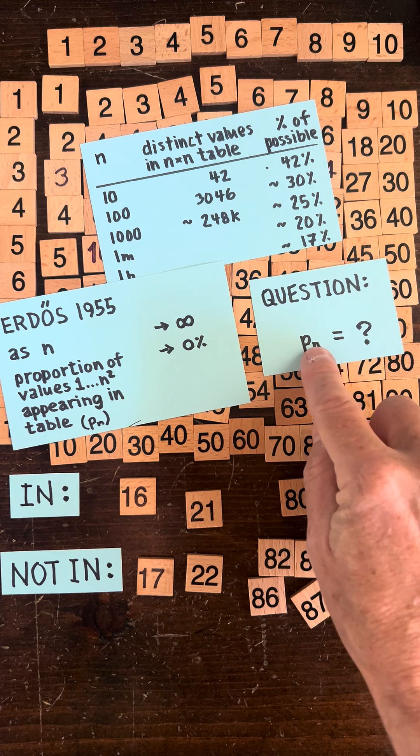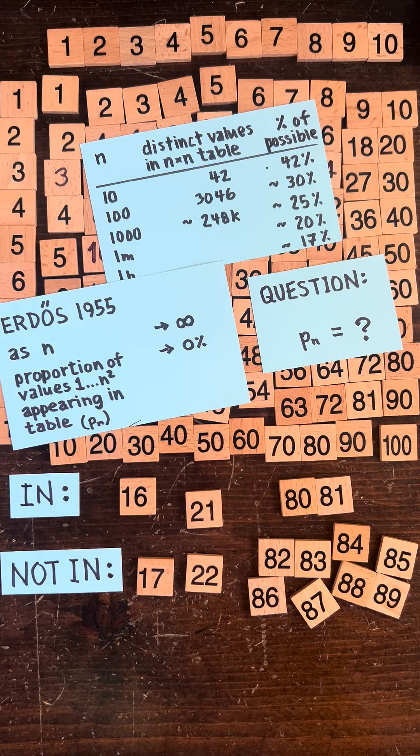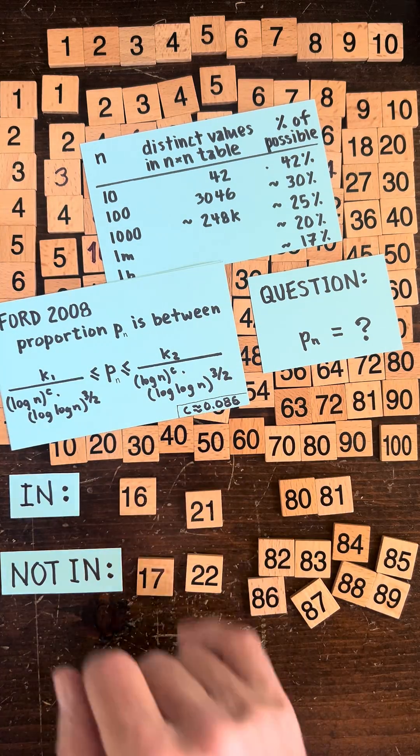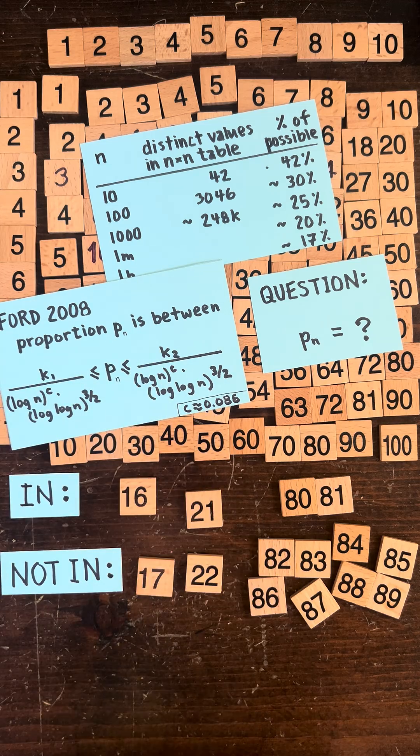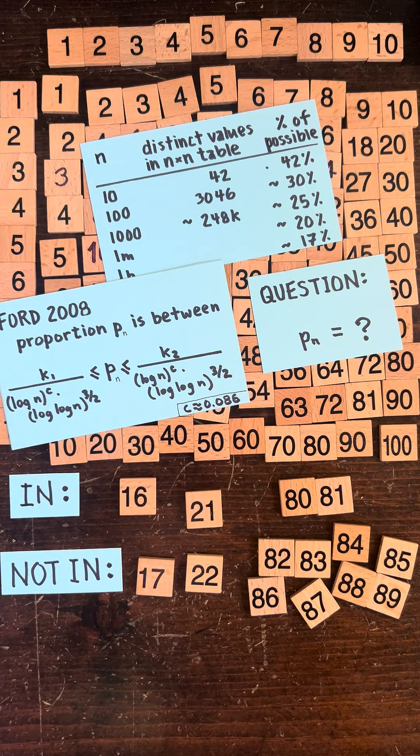Okay but what about for a particular n? Is there a formula that tells you the proportion? The best answer is Ford's, which says the proportion is somewhere between these two formulas where k1 and k2 are constants. So it's somewhere in there but we can't say exactly what it is.